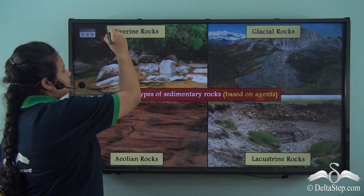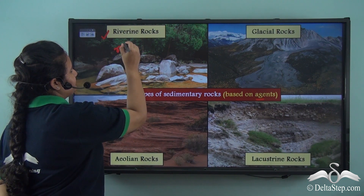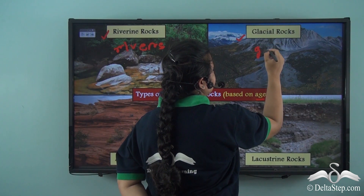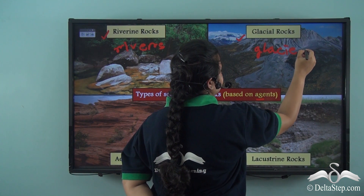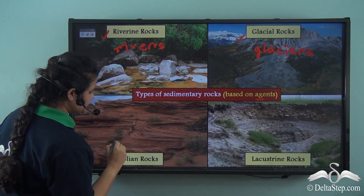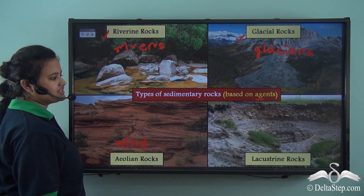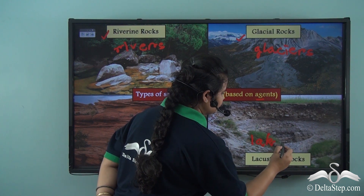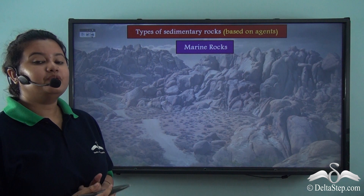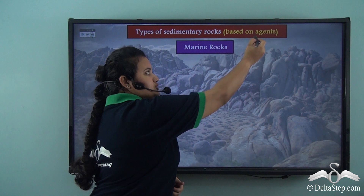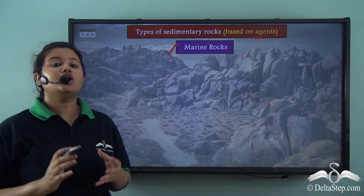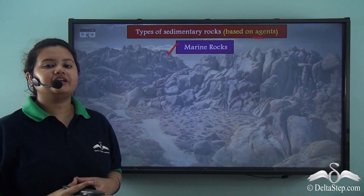Riverine rocks are formed by agents like rivers. Glacial rocks are formed by agents like glaciers. The rocks formed by wind are called aeolian rocks, and lacustrine rocks are formed by agents like lakes. There is another type of sedimentary rock based on the agent of formation — marine rocks. Marine rocks are generally found at ocean floors and are formed when rivers deposit the eroded materials at the ocean beds. The agent that forms marine rocks is the ocean.